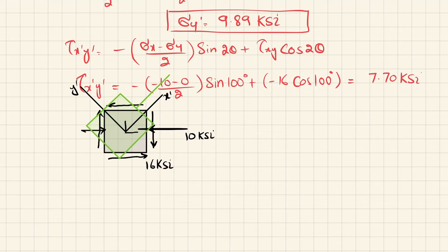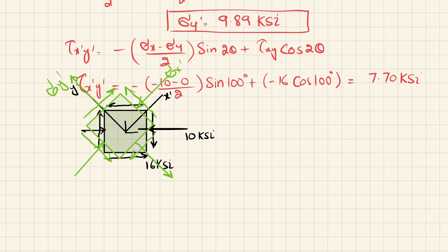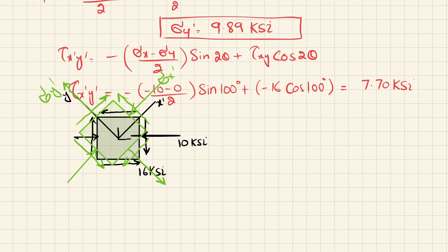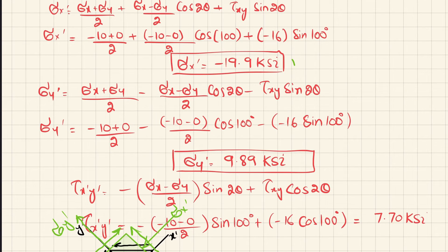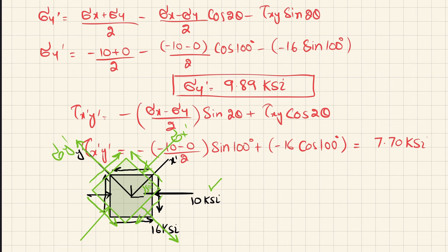On the new element, Sigma X dash is minus 19.9 KSI, which is compressive. Sigma Y dash is tensile and positive. Tau X dash Y dash is also positive. The green element is the transformed one while the black one is the original. After rotation of 50 degrees, the stress in the X direction was 10 KSI and now in the X dash direction it is minus 19.9 KSI.